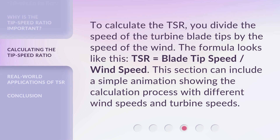To calculate the TSR, you divide the speed of the turbine blade tips by the speed of the wind. The formula looks like this: TSR equals blade tip speed divided by wind speed.